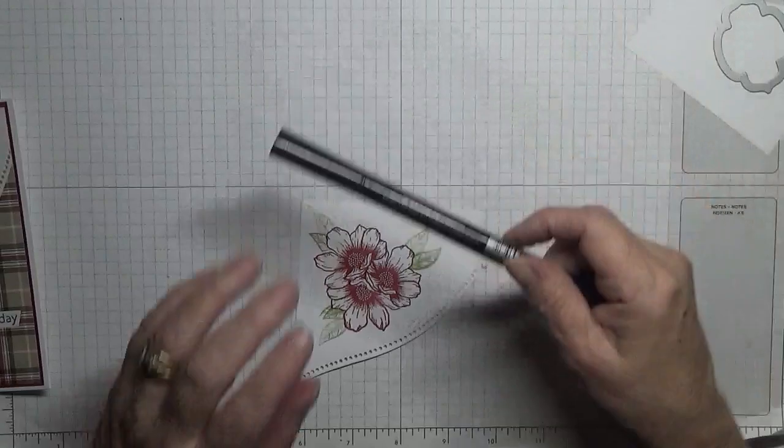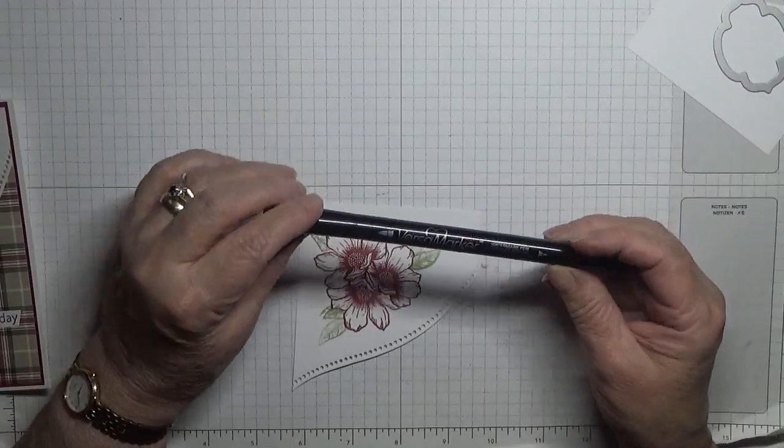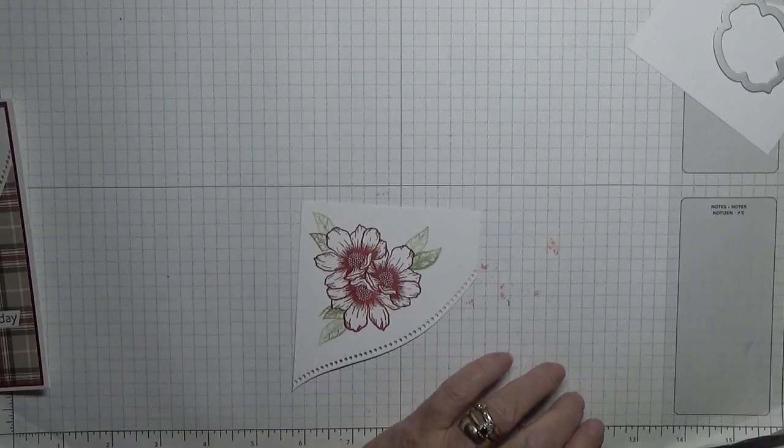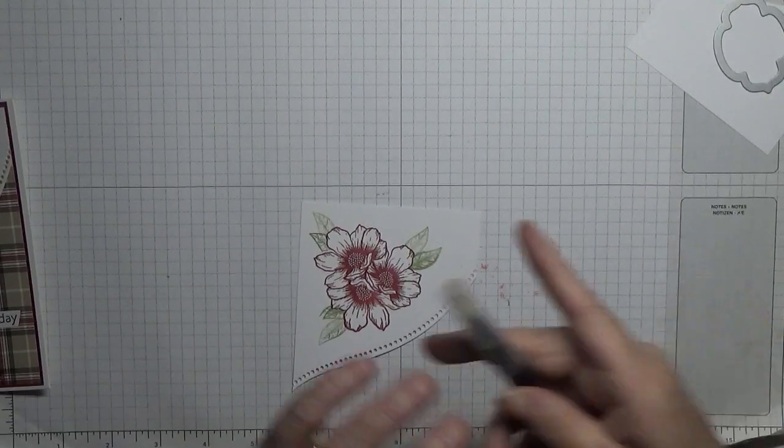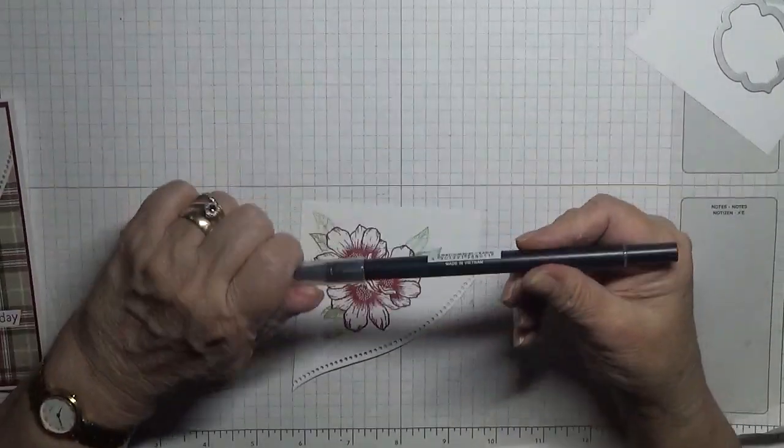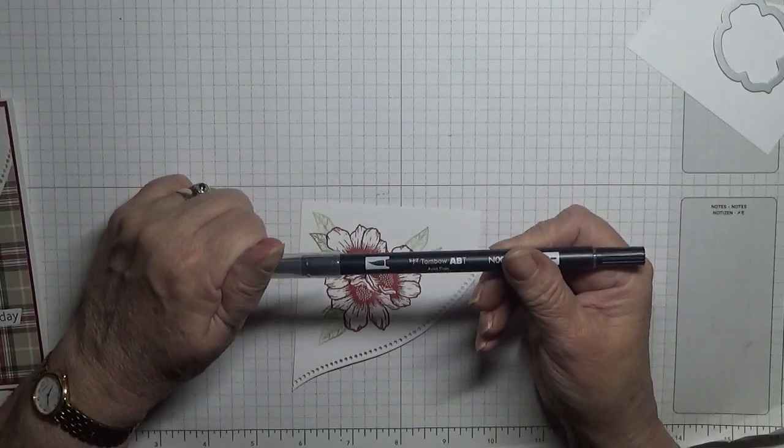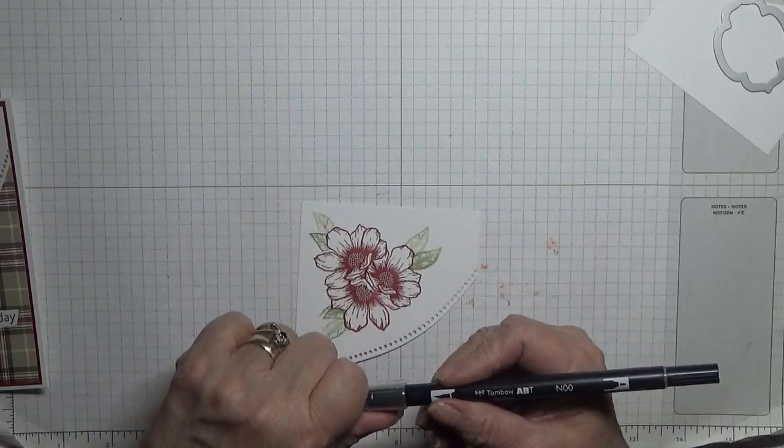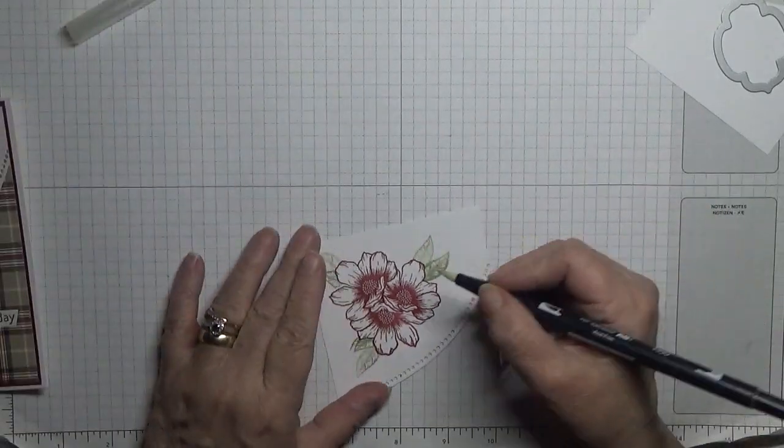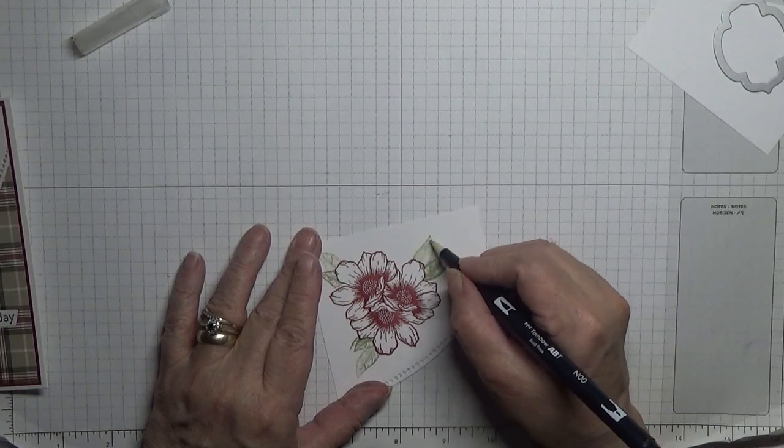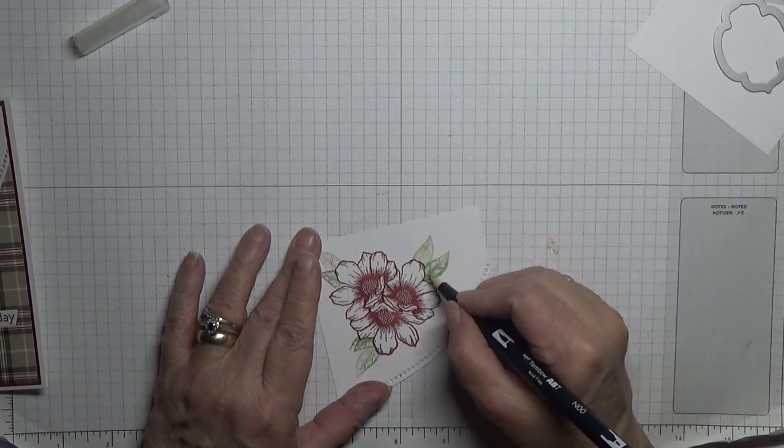Now with a blend pen—first mark, oh wrong one—this one, a blend pen. This one is a Tombow blend pen. All I'm going to do is just draw the ink out of the stamp and color in the leaves.